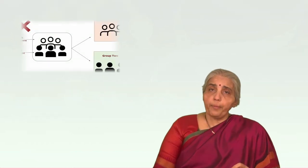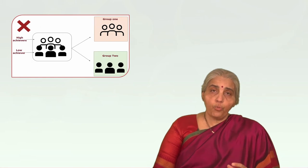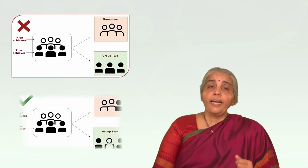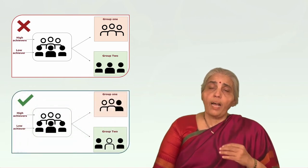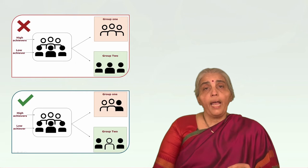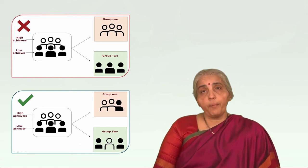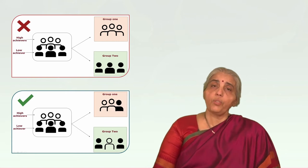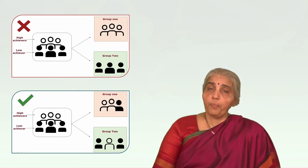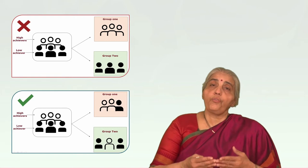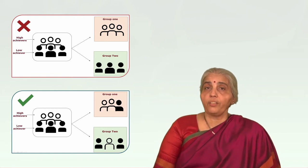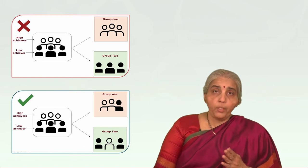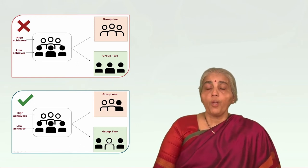Let us take an example. Suppose I take a classroom and I am trying to compare two different learning techniques or learning methods, and I take all the bright students, the high achievers in the classroom, and allot them to one particular experimental group, and then if I take the relatively low achievers and put them into the control group and then run my experiment, I am almost sort of planning beforehand what my results are going to be like.